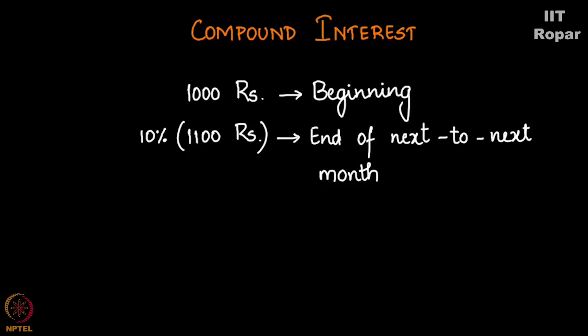Now what is that? Eleven hundred times ten percent which is point one that gives me one point two one. So which is basically twelve one zero, thousand two hundred and ten rupees at the end of two months.